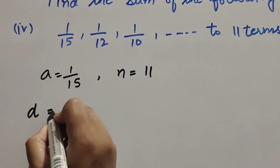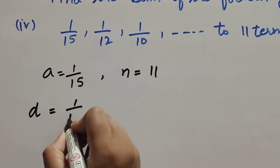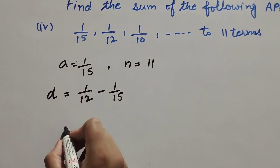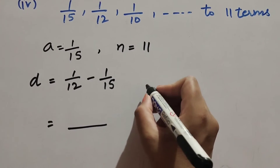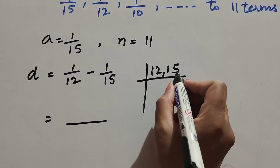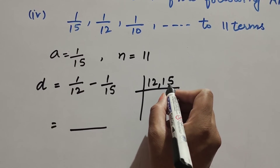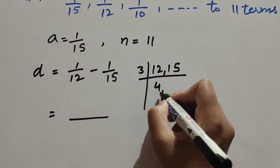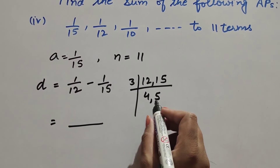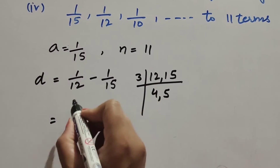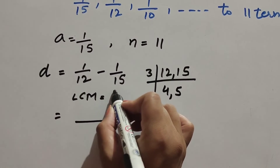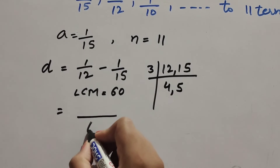Common difference d = second term minus first term = 1/12 − 1/15. To subtract, we find LCM of 12 and 15. Both are divisible by 3: 12÷3 = 4, 15÷3 = 5. Since 4 and 5 share no common factor, LCM = 3×4×5 = 60.